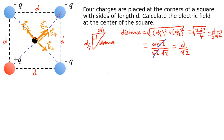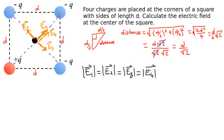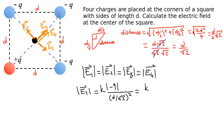All four electric fields are equal in magnitude: |E1| = |E2| = |E3| = |E4|. So if we calculate one of them, we can carry out all calculations. For E1: the magnitude equals k times the absolute value of the charge (negative 3q) divided by the distance squared. That simplifies to k times q divided by d²/2, which gives 2kq over d².